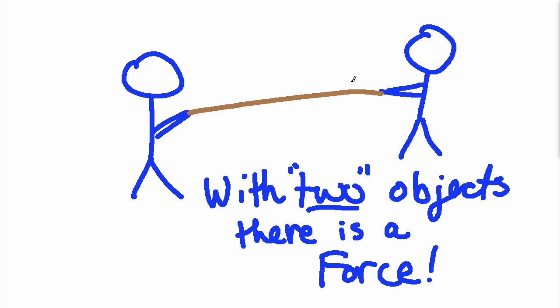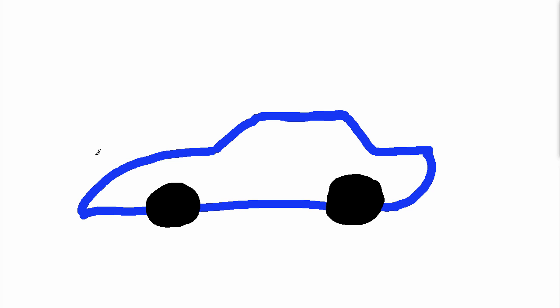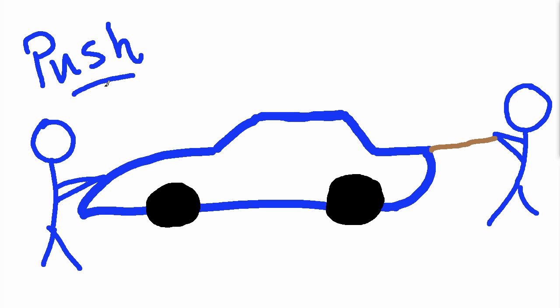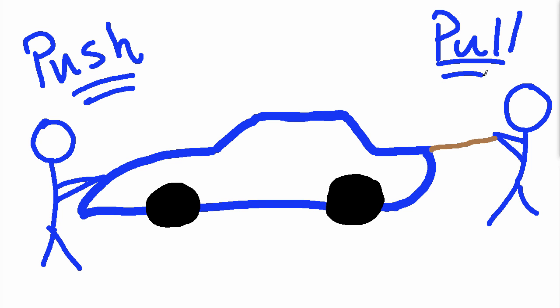As an everyday application, imagine you have a car. If you want to make it move, you have to exert a force on it. You can have a person who's pushing on the car, or a person who's pulling on the car. In either case, the person is in contact with the car. These two types of forces — pushes and pulls from contact between two objects — are the majority of forces we experience in our everyday lives.